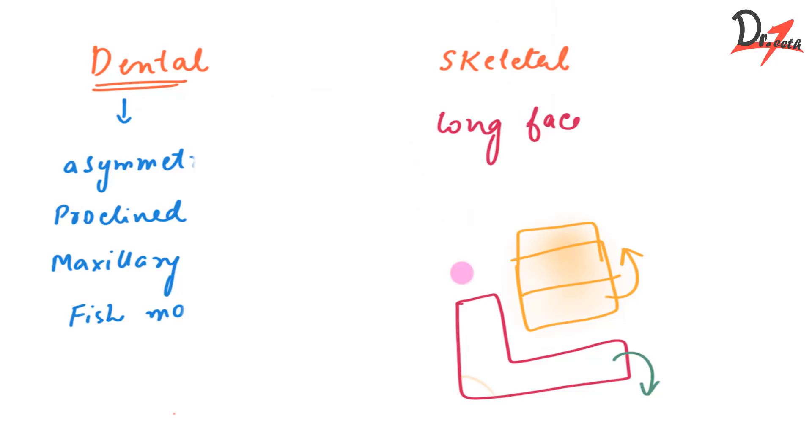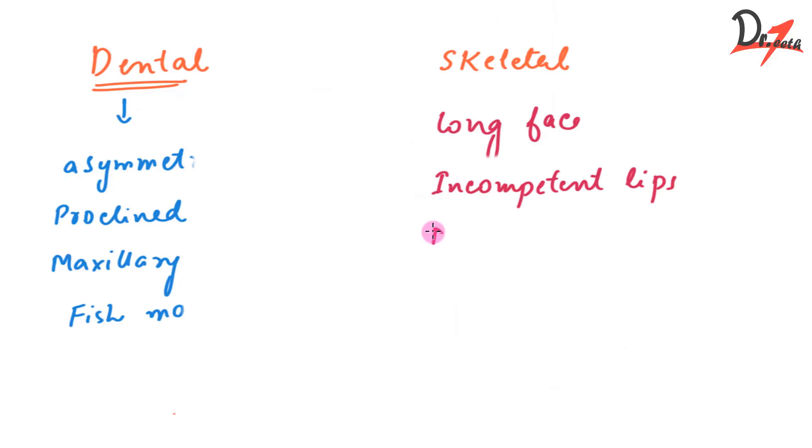Then obviously the second feature would be incompetent lips. Now cephalometric analysis will reveal two very important things and that will be increase in the mandibular plane angle. So mandibular plane angle will increase and also the gonial angle will increase.